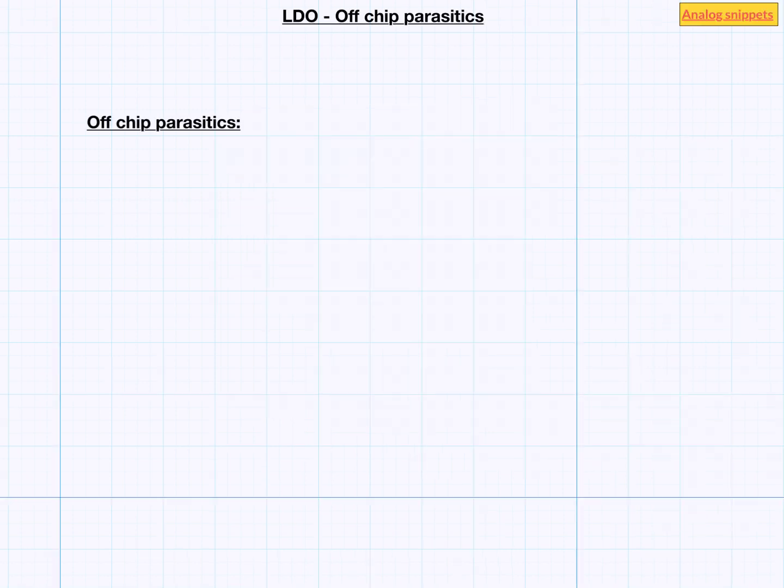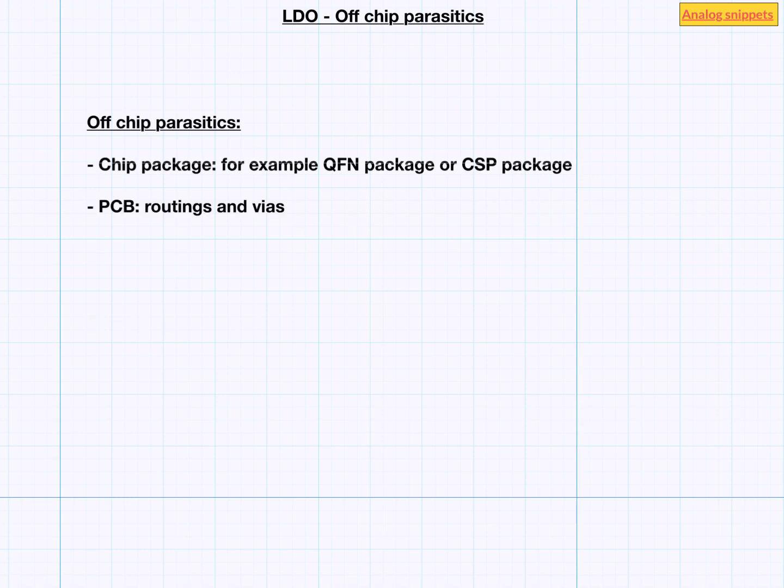We can broadly categorize these parasitics in 3 sources. There are parasitics generated because of the chip package. Two popular choices of packages are QFN and CSP. Then there are parasitics generated by PCB routing or PCB vias. And finally there are parasitics associated with off-chip capacitors itself. Here ESR stands for equivalent series resistance and ESL stands for equivalent series inductance.